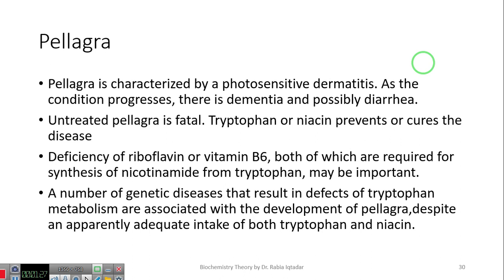Untreated pellagra is fatal. In this form, we have a progression of disease. First of all, skin is affected. Then it moves to brain. And then it has also affected the GIT. So overall, it can affect the whole body. So if we do not treat pellagra, it can be a very dangerous situation. And it will be fatal.